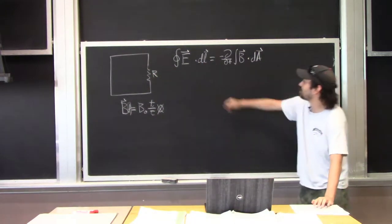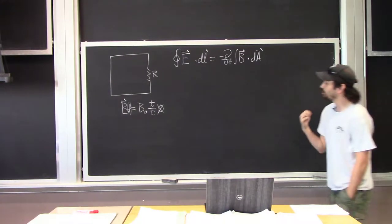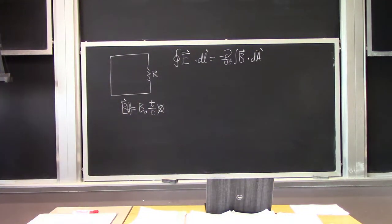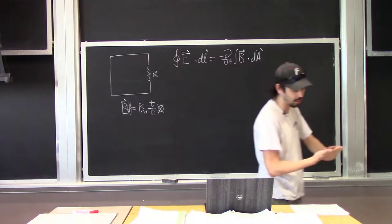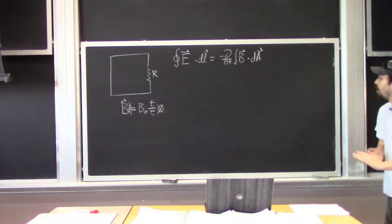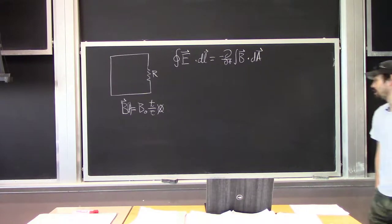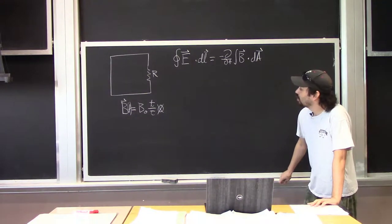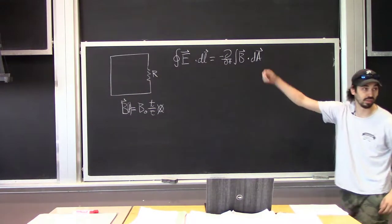What we're going to do to start out with today is go through the homework that we had. This really carries through from what we talked about in class yesterday — how do we solve these differential equations that we get from applying Faraday's law. Now the thing that's a little bit different about this one than the classwork yesterday was that in the classwork I told you there was some battery in this loop.